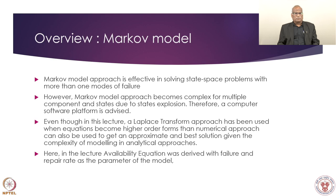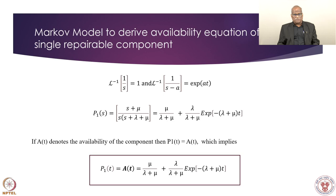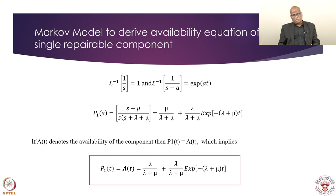This equation represents the availability A(t) of the component. Since P₁(t) is the probability of being in state 1 (operating), A(t) = mu/(lambda + mu) + [lambda/(lambda + mu)]·e^(−(lambda+mu)·t). The unavailability can be obtained similarly from P₀(t), or as 1 − P₁(t). This Laplace transform approach can be replaced by matrix methods or the Runge-Kutta numerical method, though analytical methods are preferred.